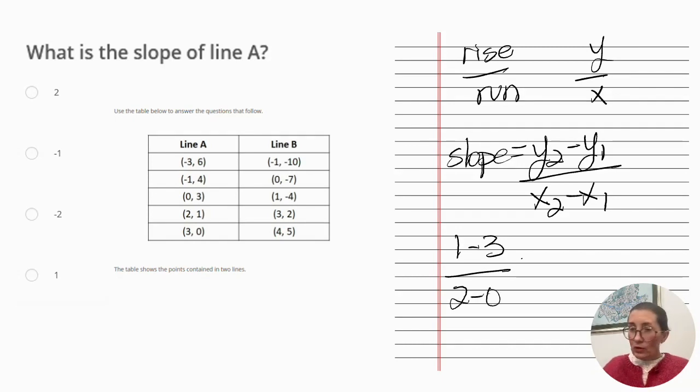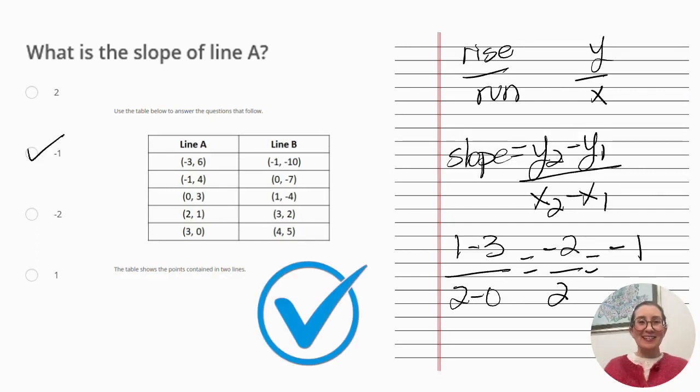we get negative 2 over 2, which is equal to negative 1. And there you have it.